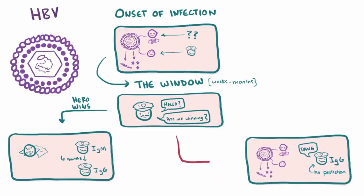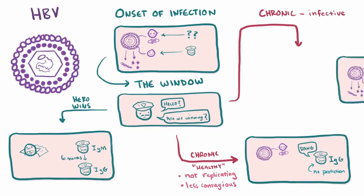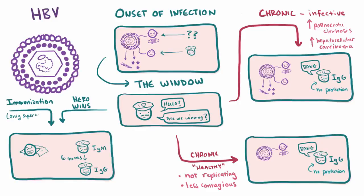If the battle is lost, the host transitions into chronic viral hepatitis, defined by it continuing after six months. When chronic, the host could present as sort of healthy and will likely have the presence of surface antigen and core antibody, but no DNA or E antigen — meaning the supervillain is there but not replicating, and the host is contagious but at lower risk. The other option is an infective state, where the whole villain force is active along with an overwhelmed police force, increasing the risk for post-necrotic cirrhosis and hepatocellular carcinoma. One way to get around this is by immunization, which skips these steps and gets you right to the IgG superhero antibody for surface antigen.